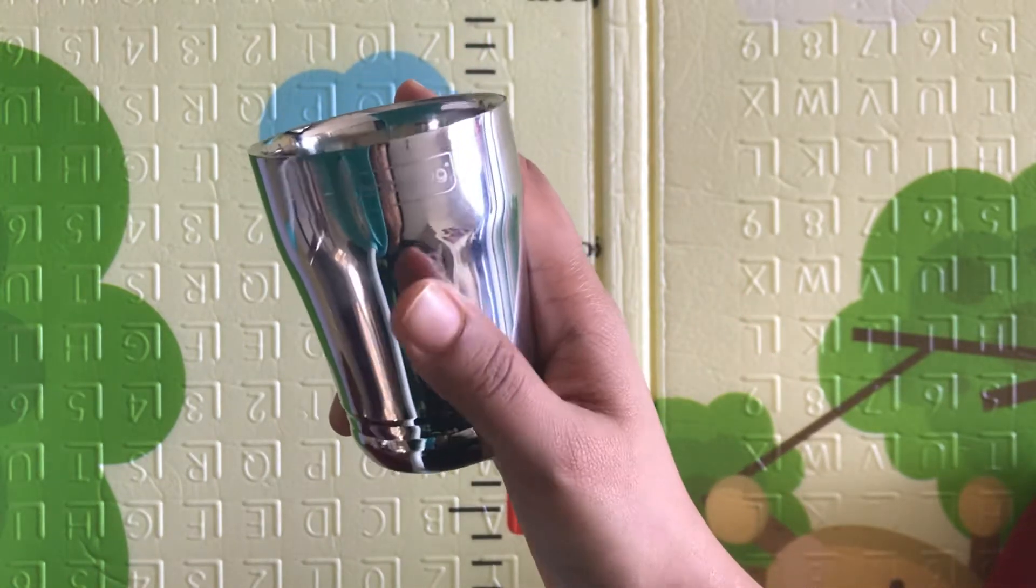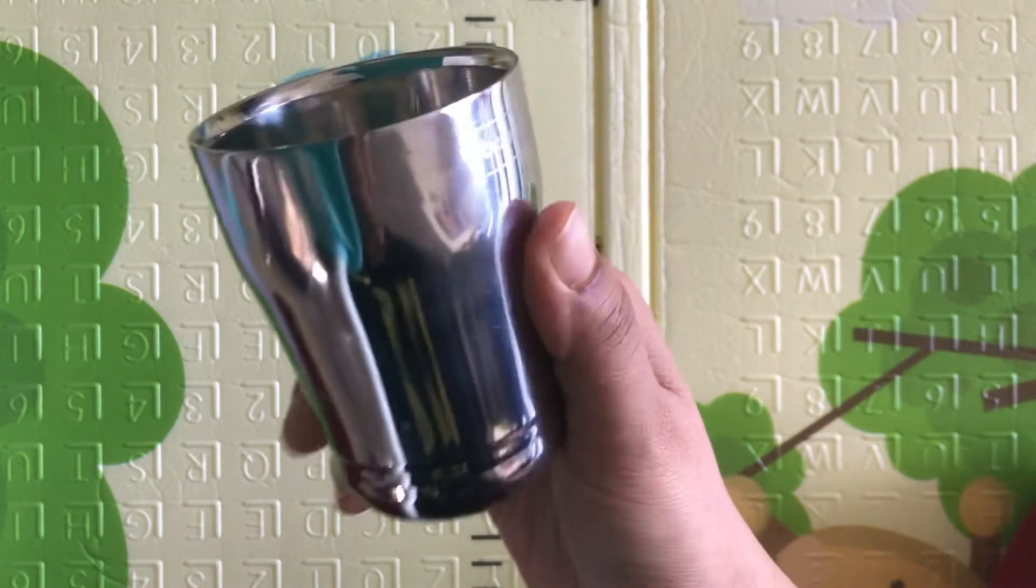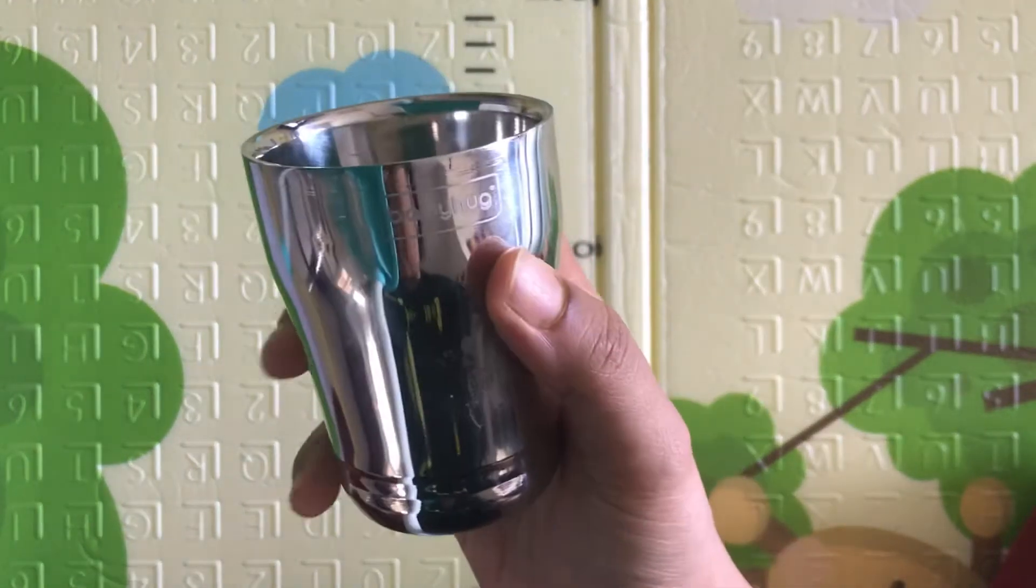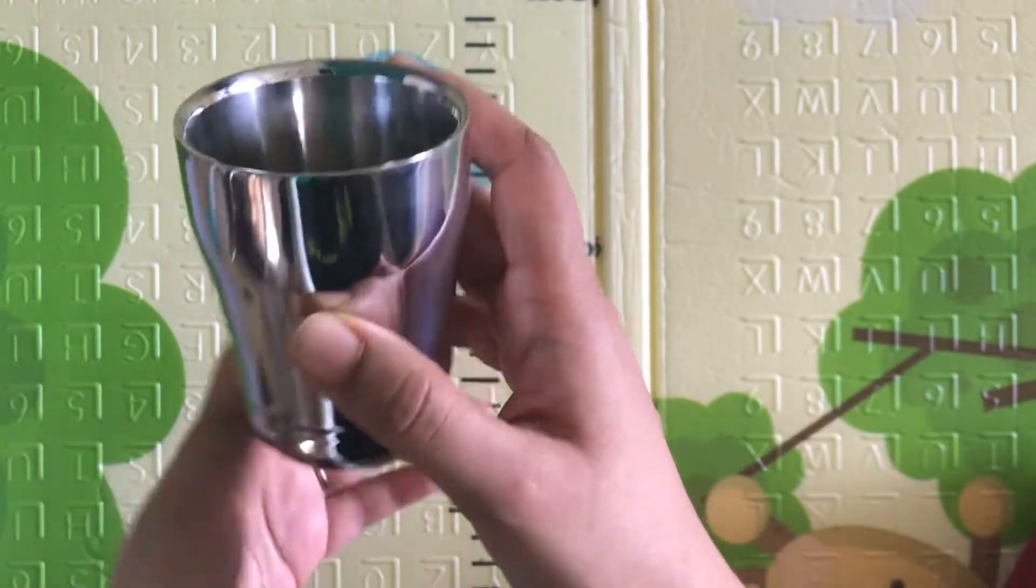Hi guys, today I'm going to review the stainless steel tumbler from Babyhug. It is made for babies, is double-walled, and the first thing I want to mention is that it is very lightweight so babies can easily hold it.